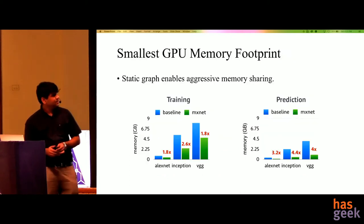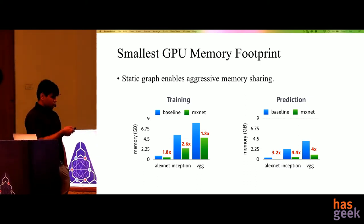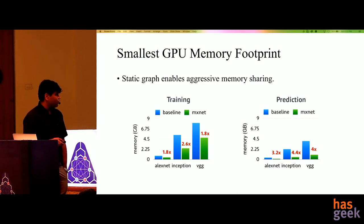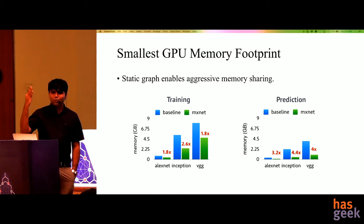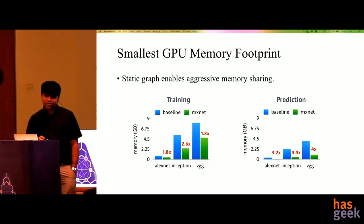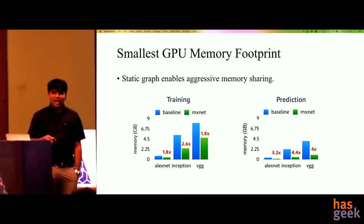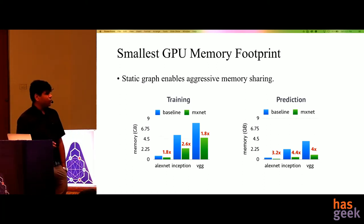Here are some memory requirement stats after MXNet optimizations are deployed. For the AlexNet model, it requires 1.8 times less memory. For the Inception model, 2.6 times less memory. For VGG, it requires half the memory. While half may not look so impressive, it literally saves you half the cost, because your trainings run for days and weeks and GPU machines are extremely expensive even in the cloud. Even for predictions, for the same level of performance, you require three to four times less memory.